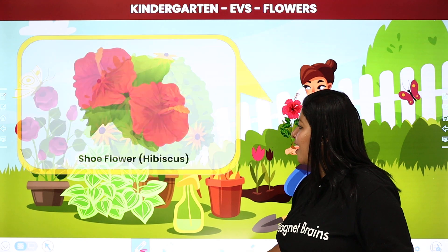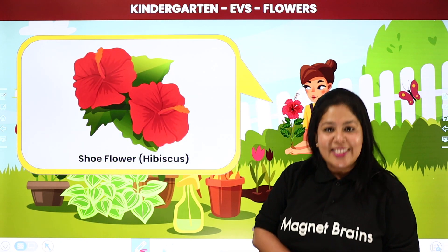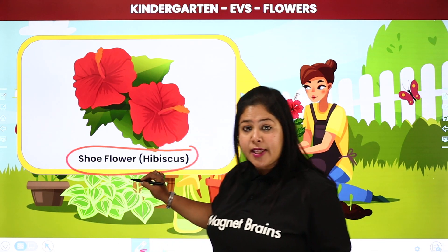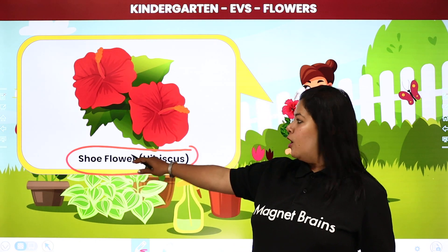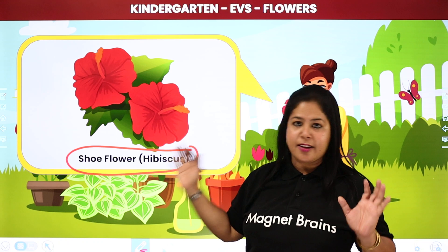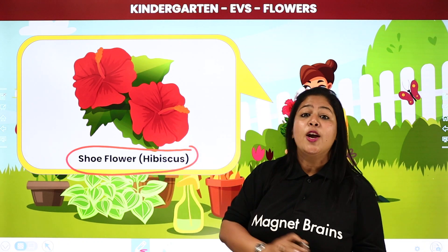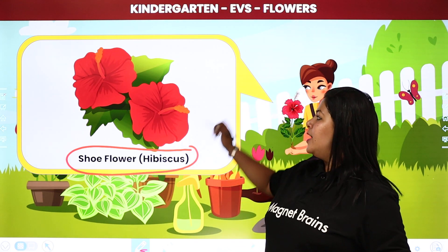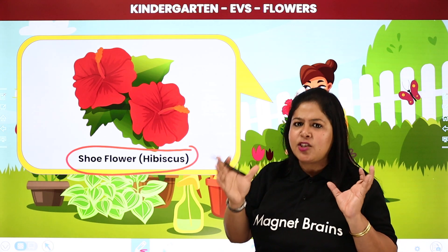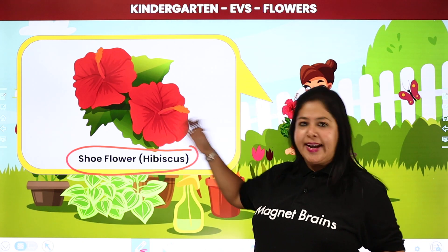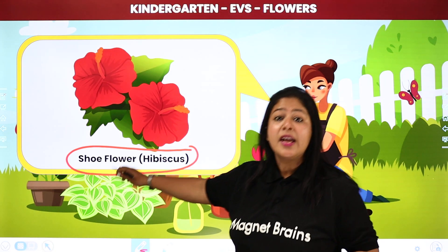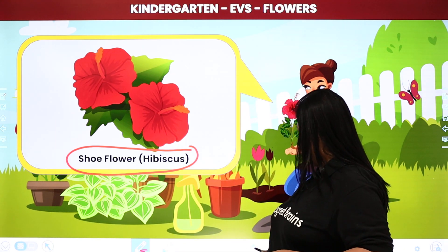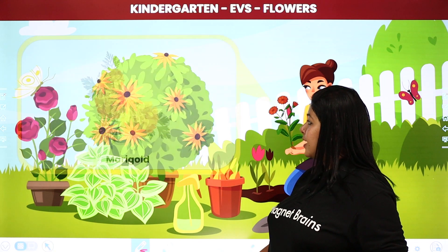Now see the next flower. Yes, this red color flower is known as hibiscus. Isse hum hibiscus bolte hain — shoe flower bhi bolte hain student. Aur hame isse bahut common humare ghar mein dekhne ko milta hai. Aur isse hum Hindi mein kya bolte hain? Gulhad — gulhad ka ful. It is red in color, kahin kahin pe white or pink bhi hota hai, but commonly it is red. So this is shoe flower hibiscus.